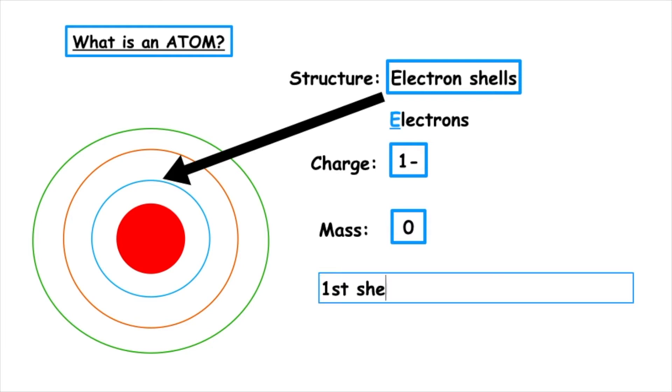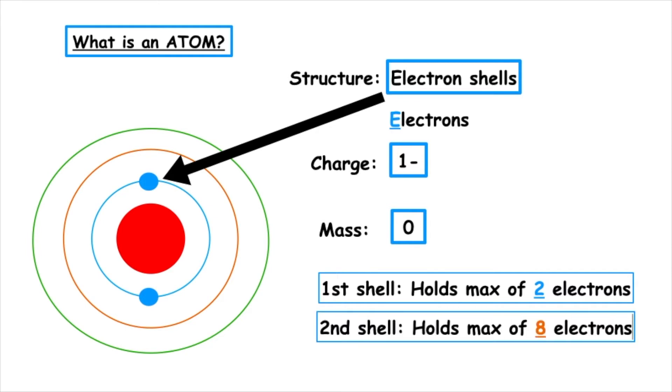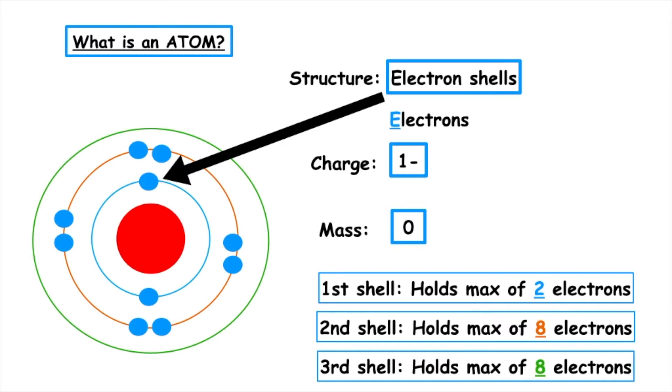In the first energy level, it can hold a maximum of two electrons and we position those at 12 o'clock and six o'clock. The second energy level can hold a maximum of eight electrons. We position them at 12, 3, 6 and 9 before doubling them up again at 12, 3, 6 and 9 o'clock. The third energy level or the third shell can also hold a maximum of eight electrons, which sits singly before doubling up.